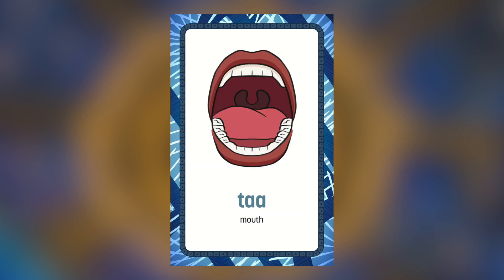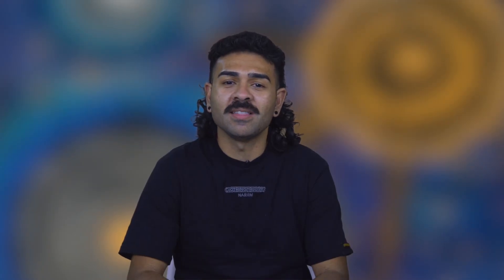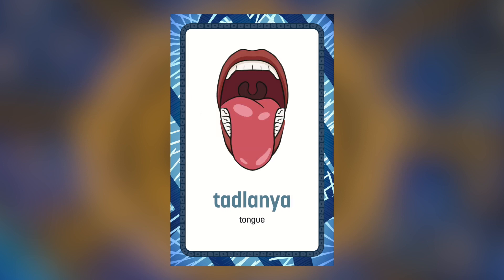Tā is mouth — tā. In the mouth, of course, are the teeth — tīrla, tīrla. And the tongue, which is tadlanya — tadlanya.